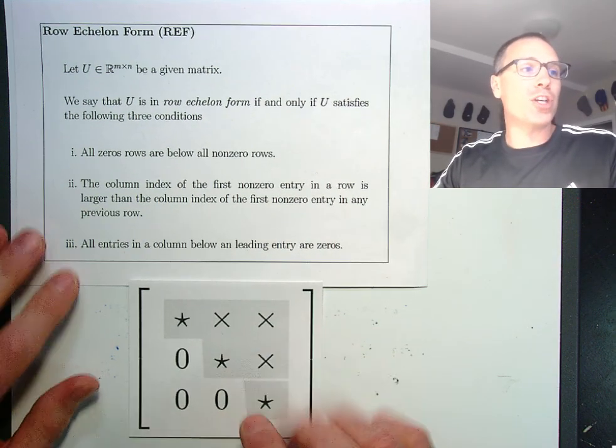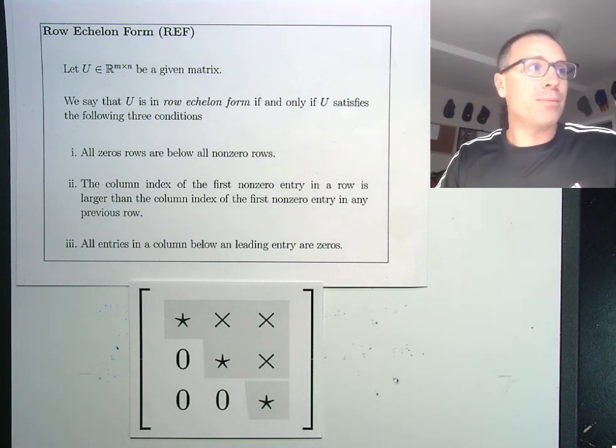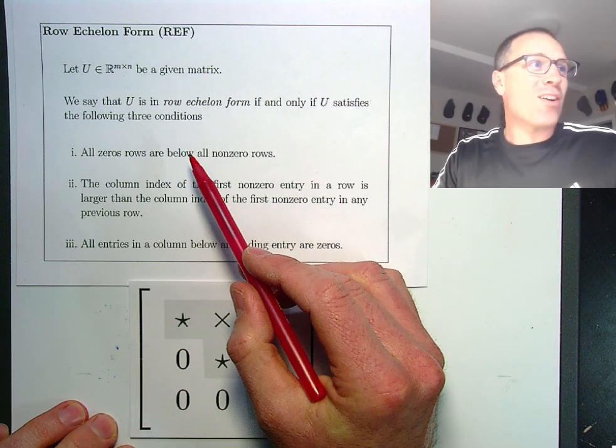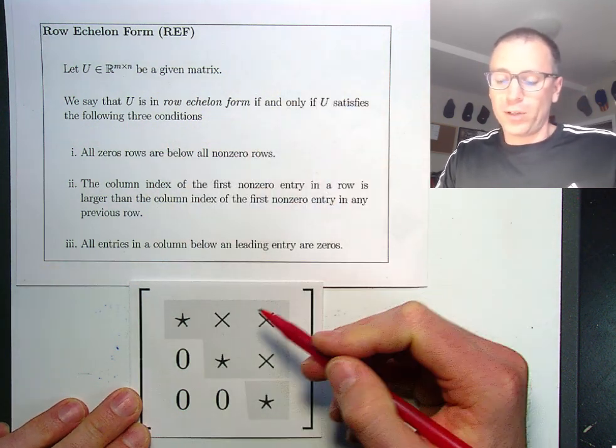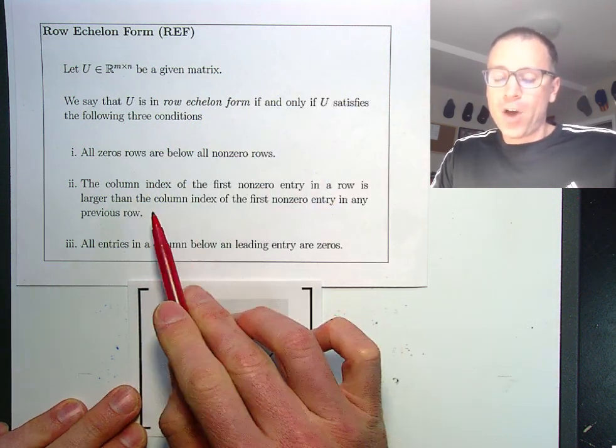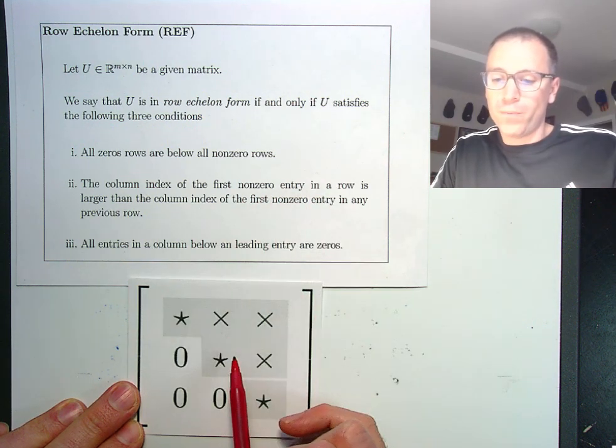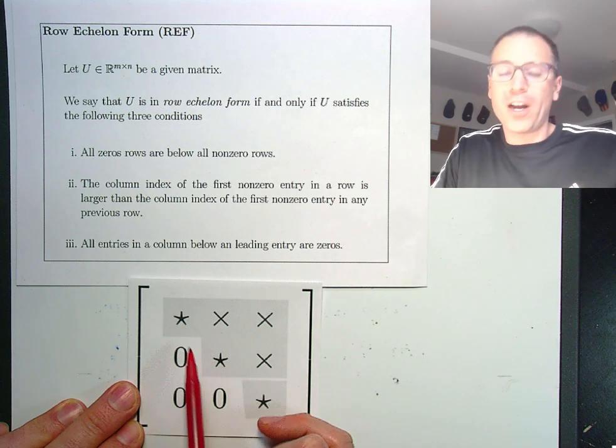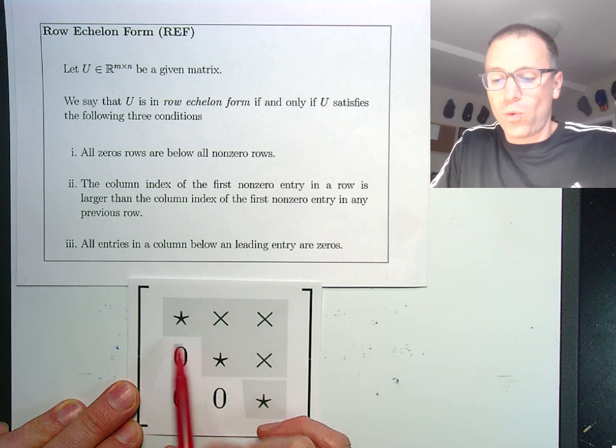We'll take a look at our first version, which is the one that showed up in non-singular linear systems problems. In this case, there are no zero rows, so that one's satisfied trivially. Notice that the column index of the first non-zero entry in a row is larger than the ones before it. Another way to say that is the leading entries go down and to the right.